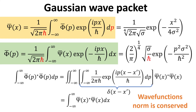It is also easy to show that the norm of the wave functions psi-bar and phi-bar are conserved upon Fourier transformation, by making use of the identity for the Dirac delta function, as discussed in the foundation of quantum mechanics series.